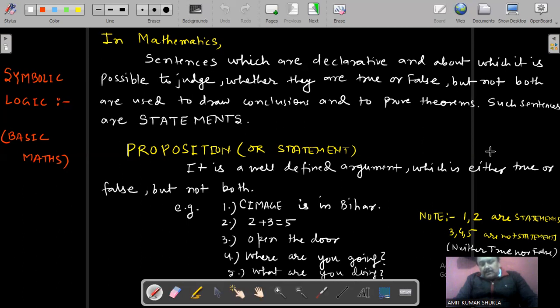So this statement, this sentence we can put in a statement or proposition. Like two plus three is equal to five. Two plus three is equal to five may be true or false. So two plus three is true because after addition of two and three, the result will be five.